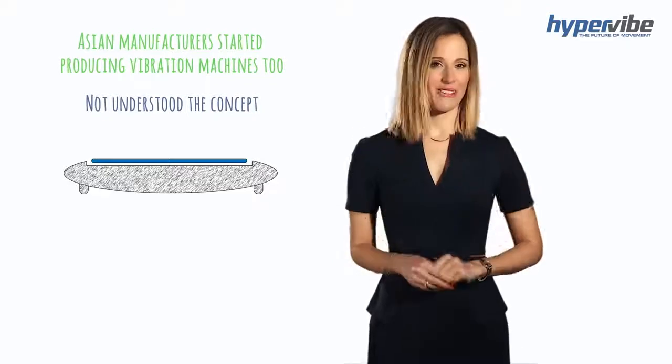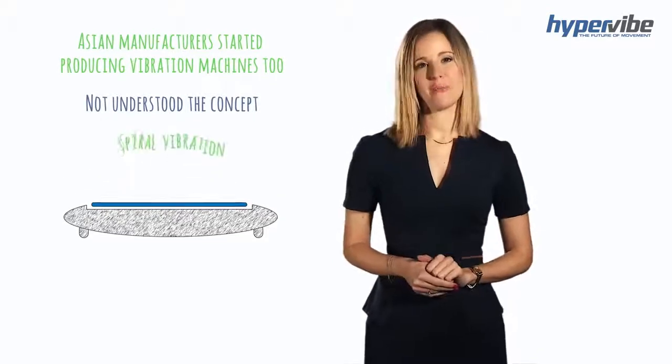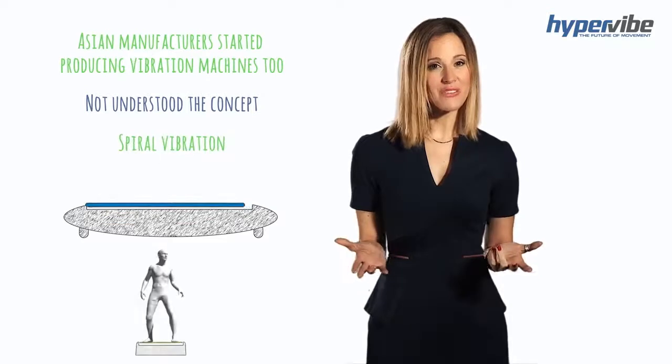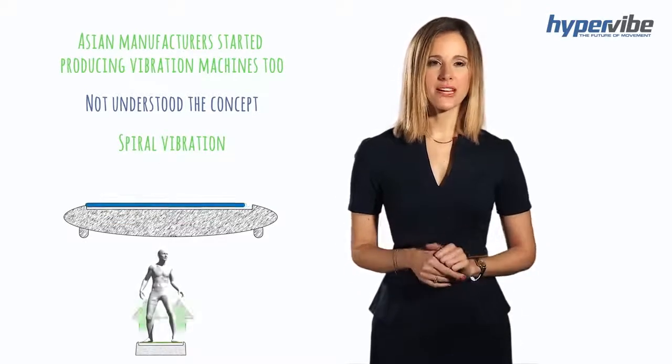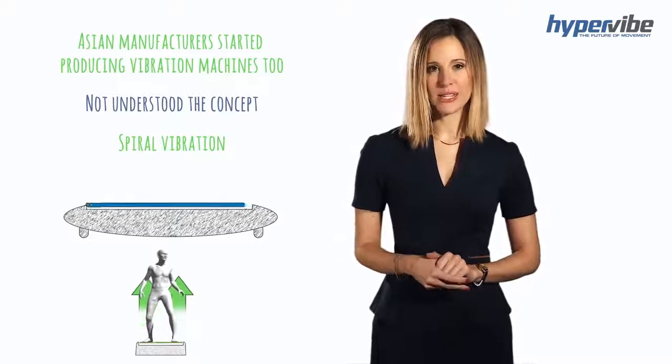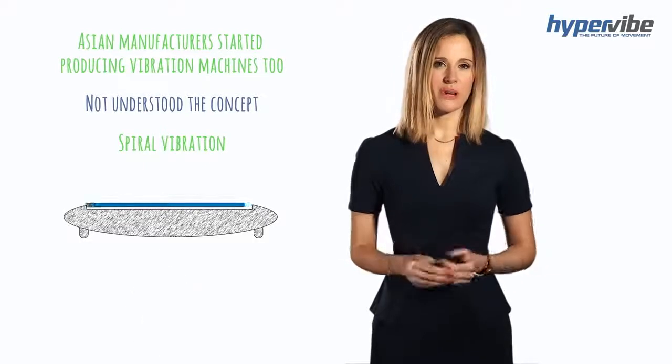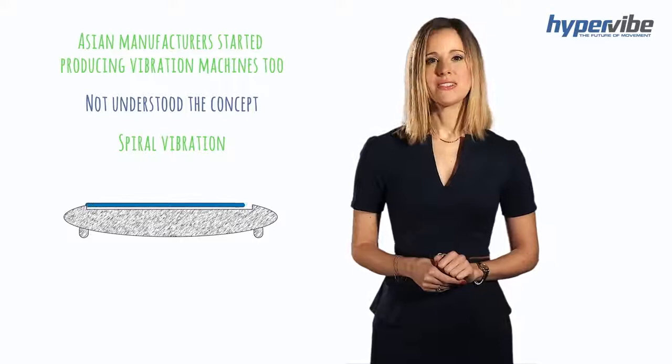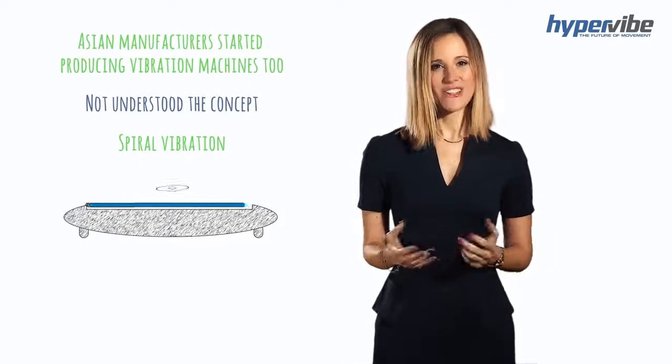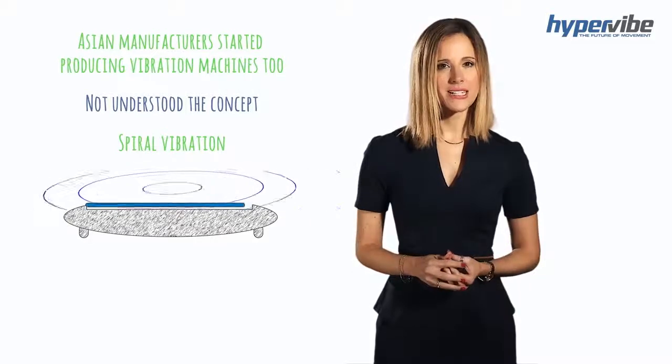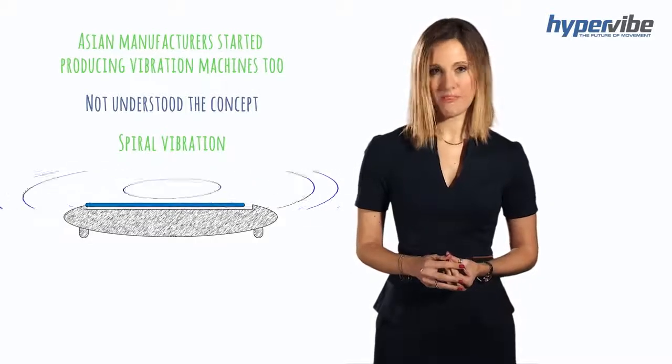The latest innovation from Asia is spiral vibration. In a traditional vibration machine, the force of gravity is primarily directed vertically up through the body. In a spiral vibration machine, the vibration is not directed into the body at all. Instead, the g-force is mostly directed horizontally away from the body.